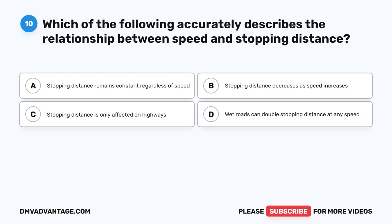Question 10. Which of the following accurately describes the relationship between speed and stopping distance? A. Stopping distance remains constant regardless of speed. B. Stopping distance decreases as speed increases. C. Stopping distance is only affected on highways. D. Wet roads can double stopping distance at any speed.